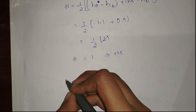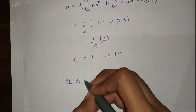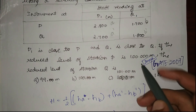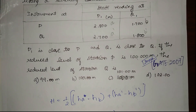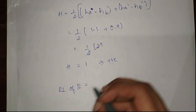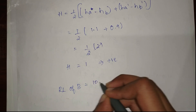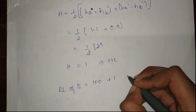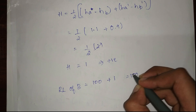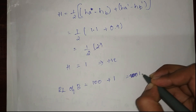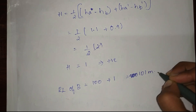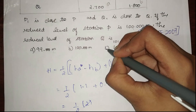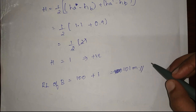That gives (1/2) × 2, so the difference h is 1. Since h is positive, the RL of the unknown station B is RL of A plus h, which is 100 plus 1, equal to 101 meters. This is our answer — option C.